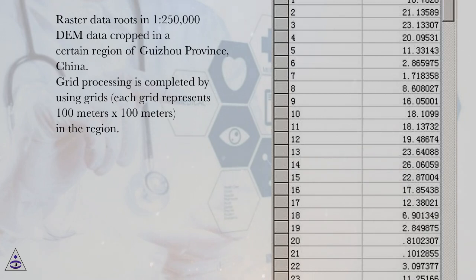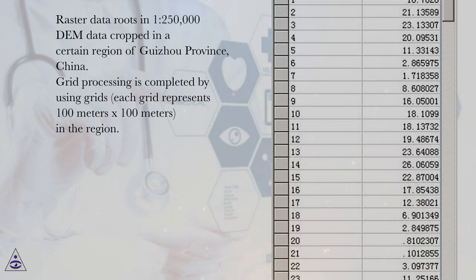Raster data routes in 1:250,000 data cropped in a certain region of Guizhou province, China. Grid processing is completed by using grids, each grid represents 100 meters by 100 meters in the region. A pivot can be got in each grid and imported into the relational database to be a record.